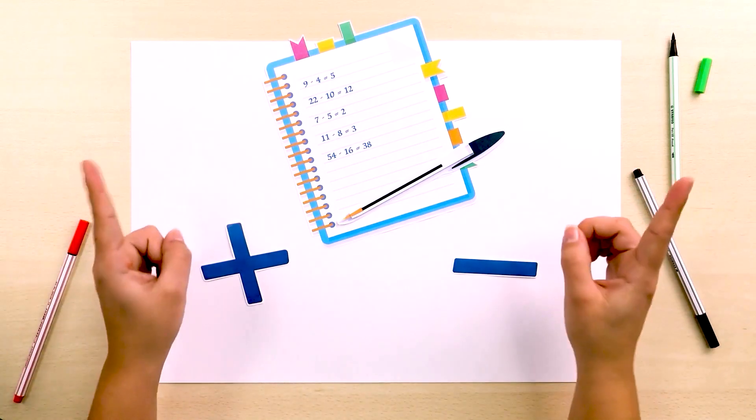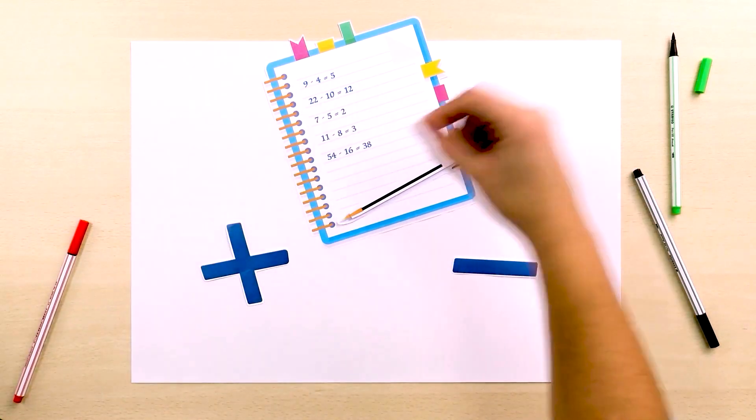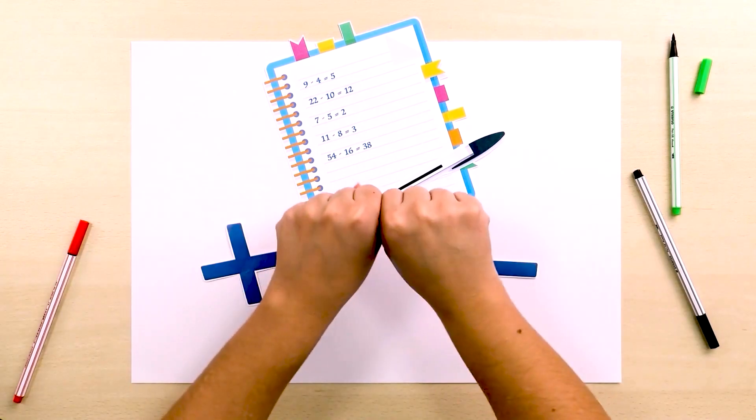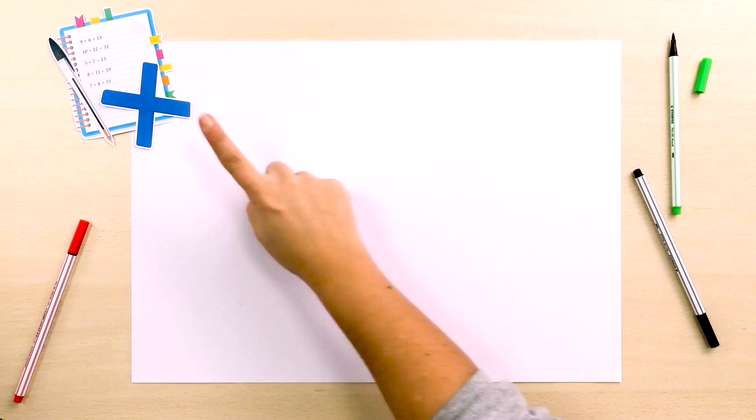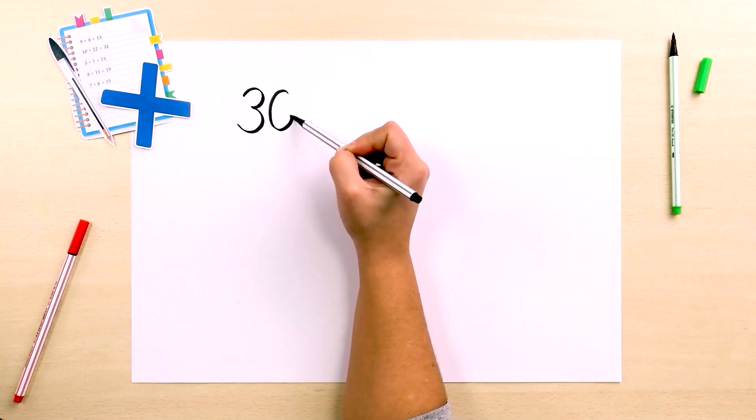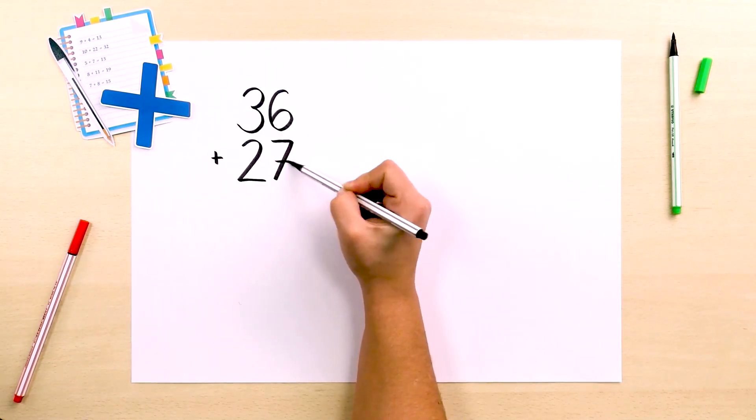One of the key strategies for developing written calculation for addition and subtraction is breaking down. Let's see how we work on some additions in first and second grade. Let's begin with the addition 36 plus 27.